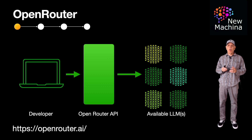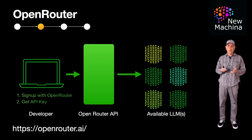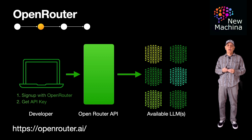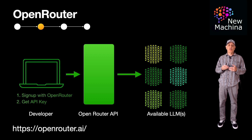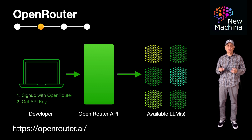So how does Open Router work? Well, after you sign up and create an API key, you'll use a single API key to make Open Router API calls to access various LLMs such as OpenAI's GPT, Anthropic's Claude, Mistral, and others, simplifying the integration process.